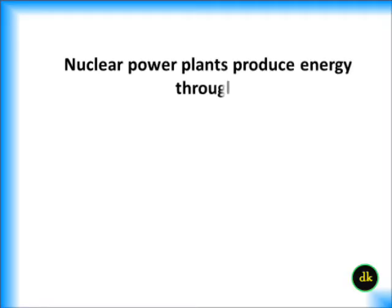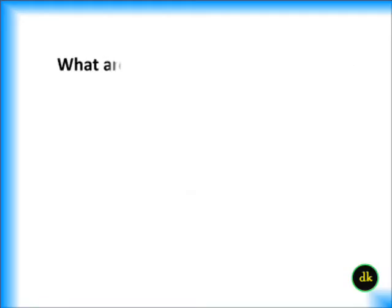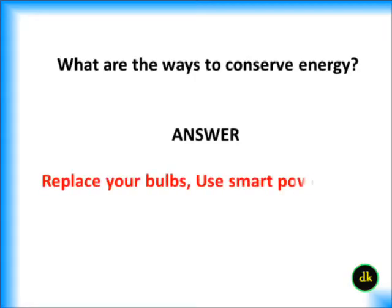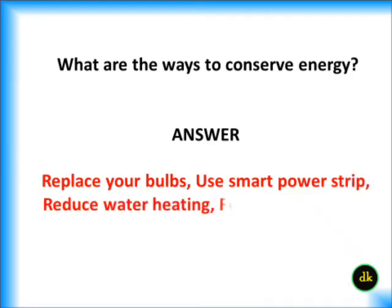Nuclear power plants produce energy through fission. What are the ways to conserve energy? Replace your bulbs, use a smart power strip, reduce water heating, and reduce dryer usage.